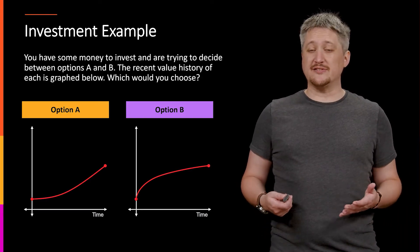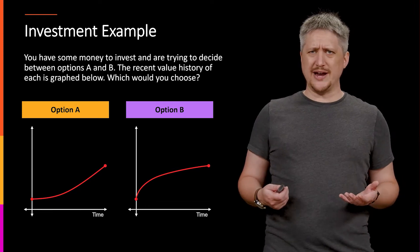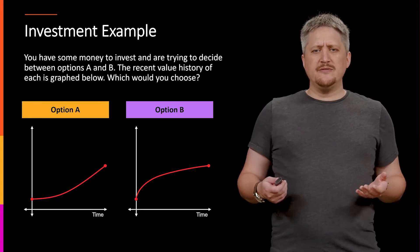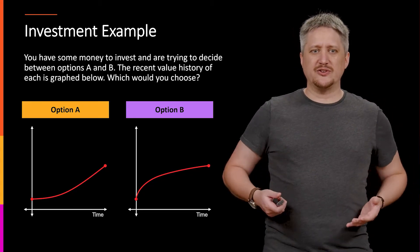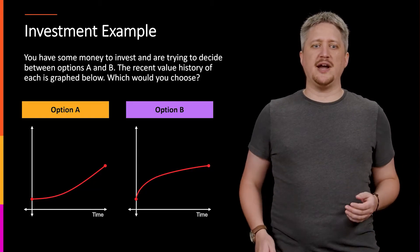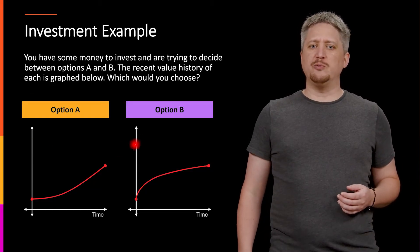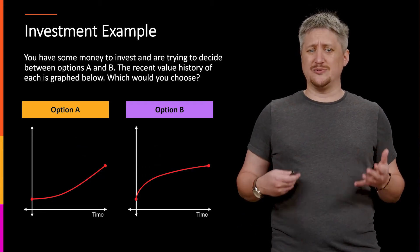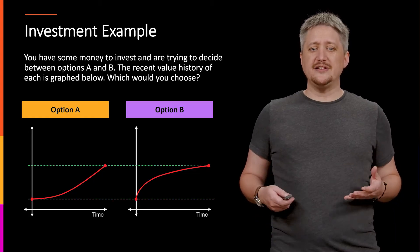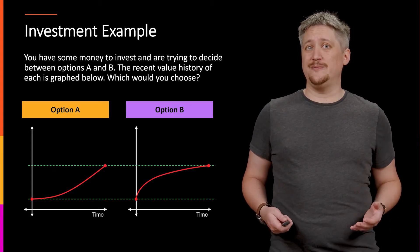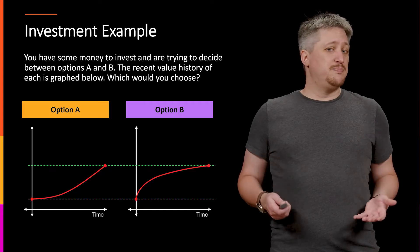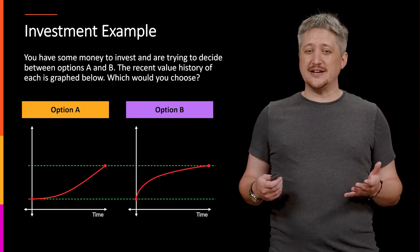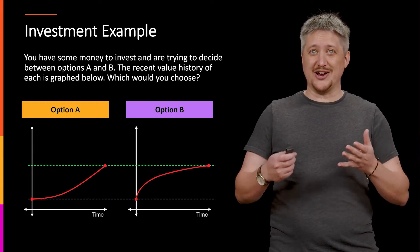Let's say you have some money to invest in some company. You're trying to decide between company A and company B — options A and B. You pull up the recent history of those companies, graph them out, and you get these two graphs. The question is which of these two looks like a better investment. It's worth taking a second to look at and realize that these things both start at the same value and end at the same value.